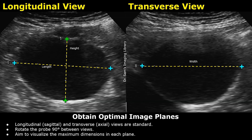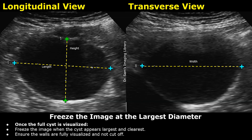To measure the cyst, first obtain optimal image planes — the sagittal or longitudinal plane and the transverse plane, which gives a cross-section view of the cyst. Try to get the maximum dimensions in each plane. Once the full cyst is seen, freeze the image. Ensure that the wall of the cyst is fully visualized and not obscured.